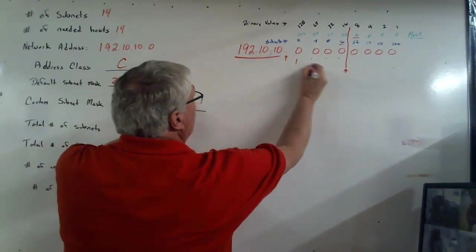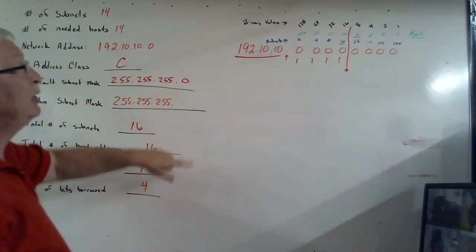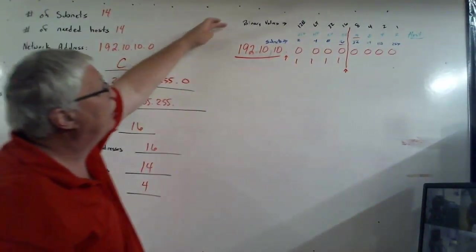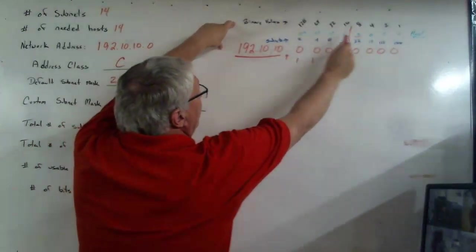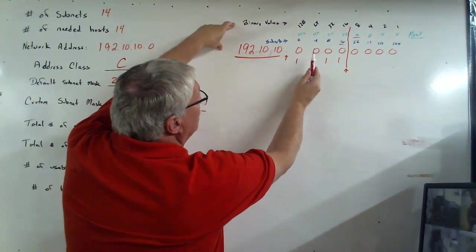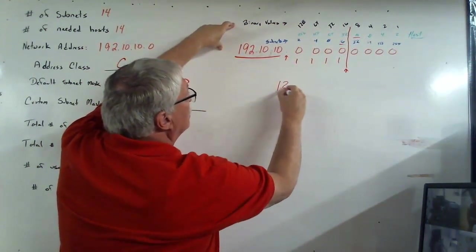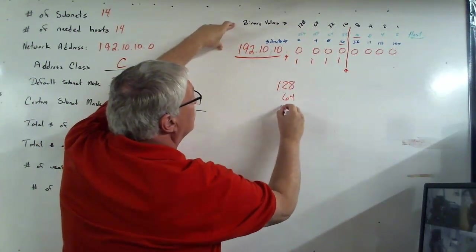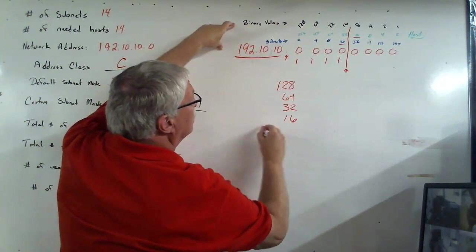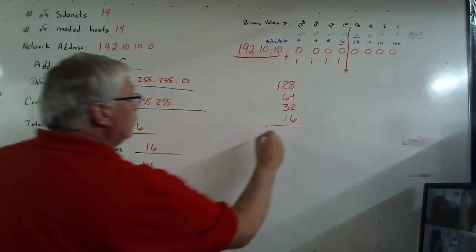What we have to do now is figure out this last one. And we know that each of these bits we borrowed are now ones. And I just happen to, in black, up above, put the binary values. So we know we're going to add 128, 64, 32, and 16.